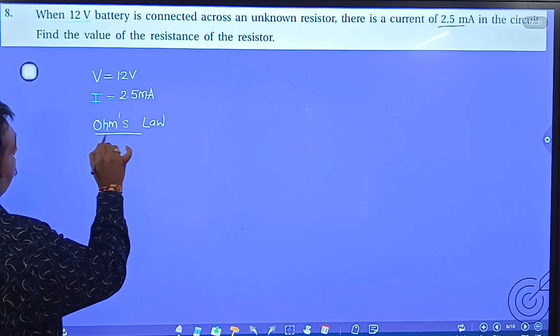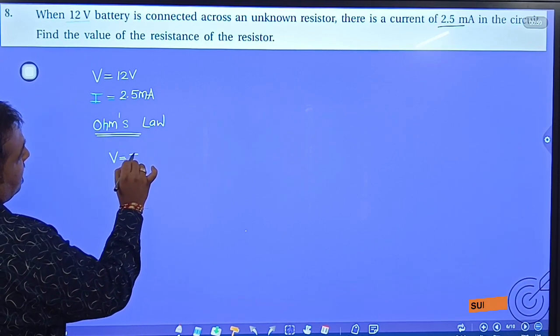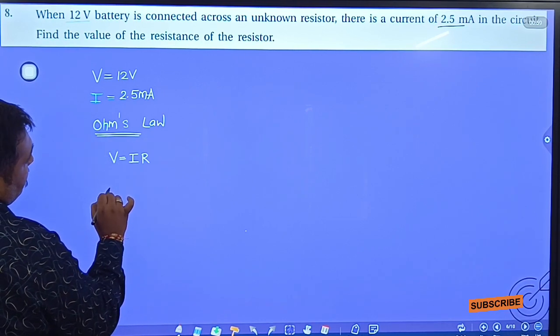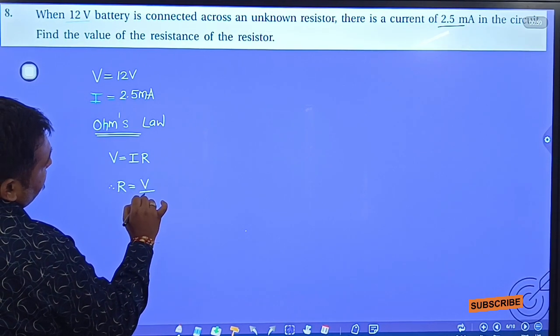So we have V is equal to IR, this formula will be formed. So R is equal to V by I.